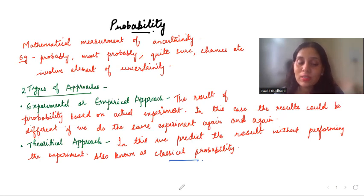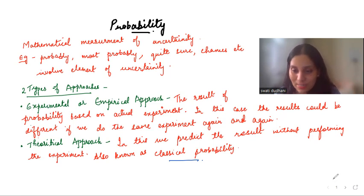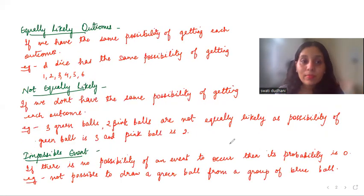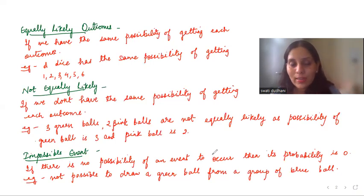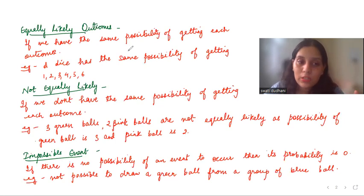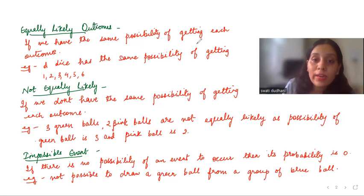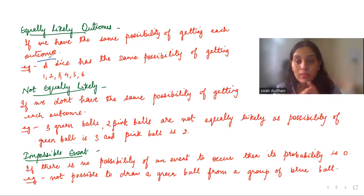These terms are not very much used, but I'm just going through all the topics you have — you just need to know that. Next is equally likely outcomes and not equally likely outcomes. The name itself suggests: equally likely means we have the same possibility of getting each outcome, so the probability of each outcome is the same.